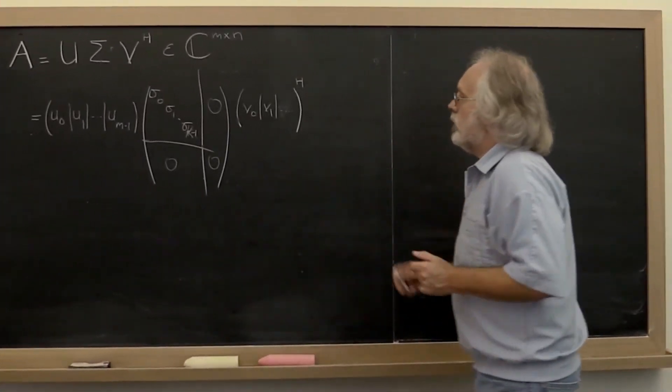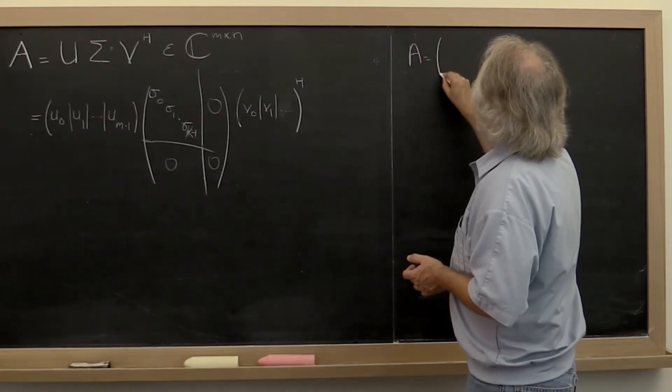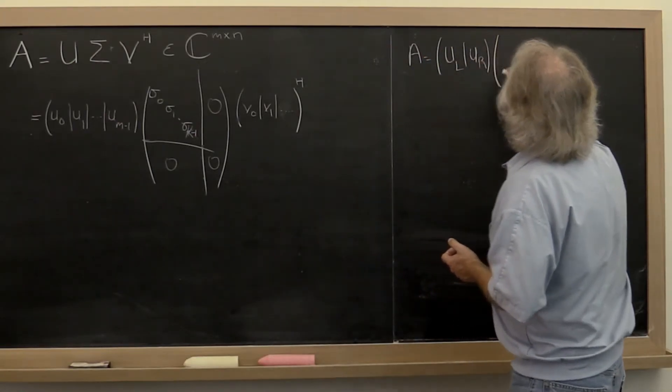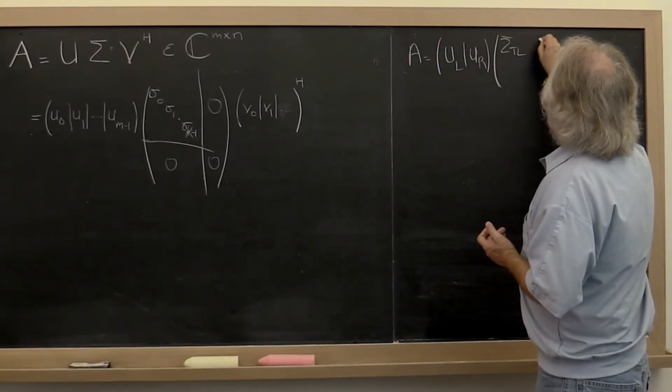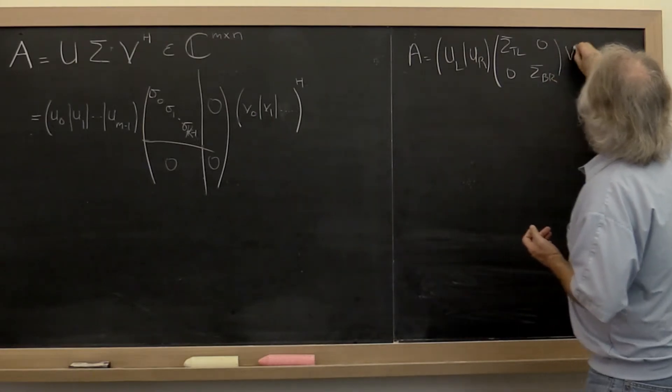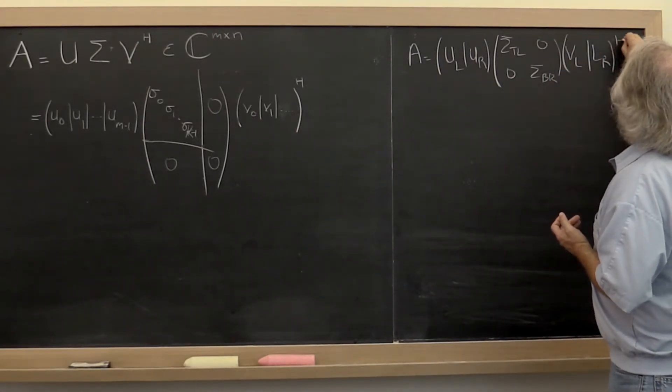How can we sharpen this a little bit? Well, notice that what this really means is that A can be written as U_left, U_right times sigma_top_left, zero, zero, sigma_bottom_right times V_left, V_right Hermitian transpose.